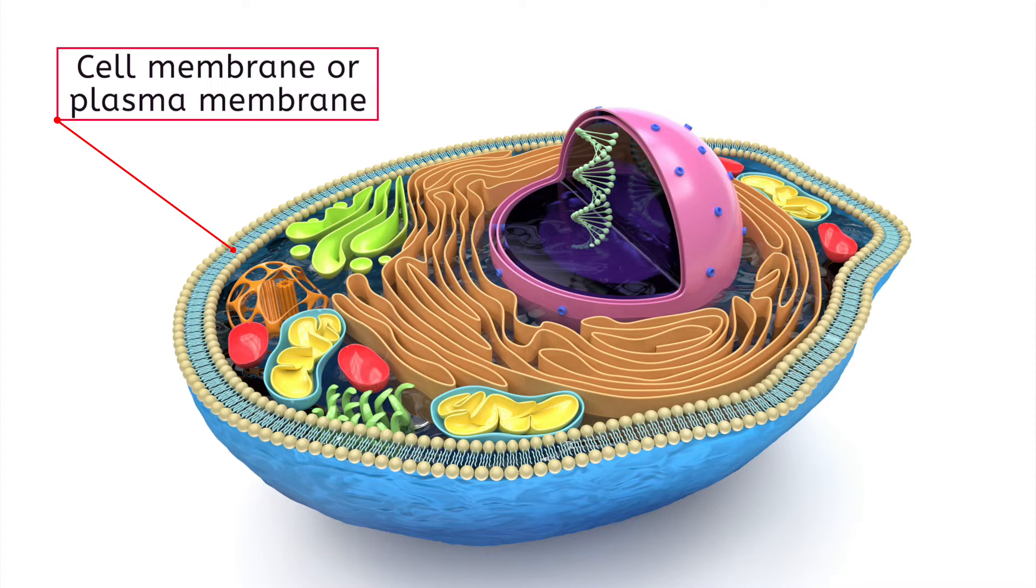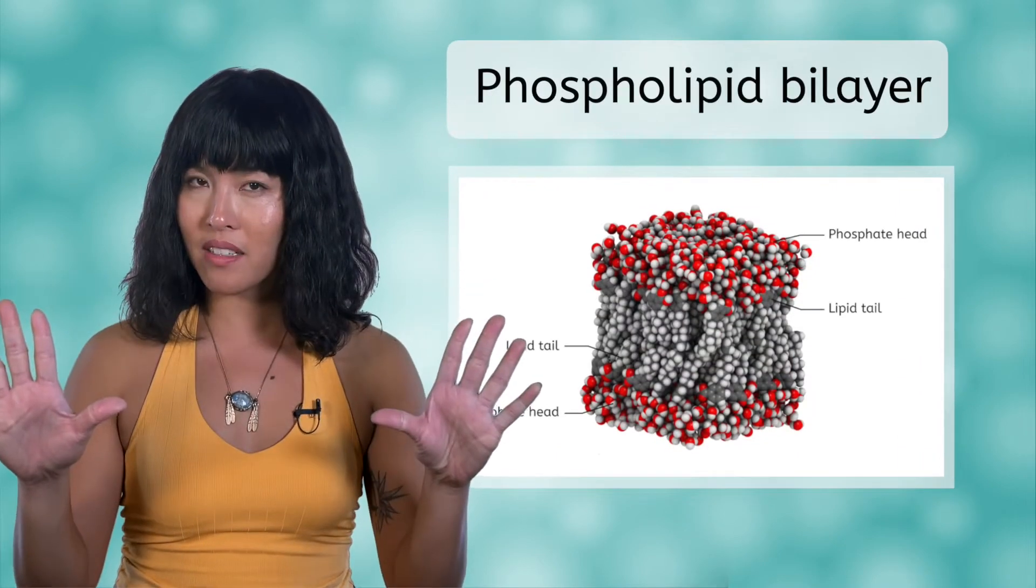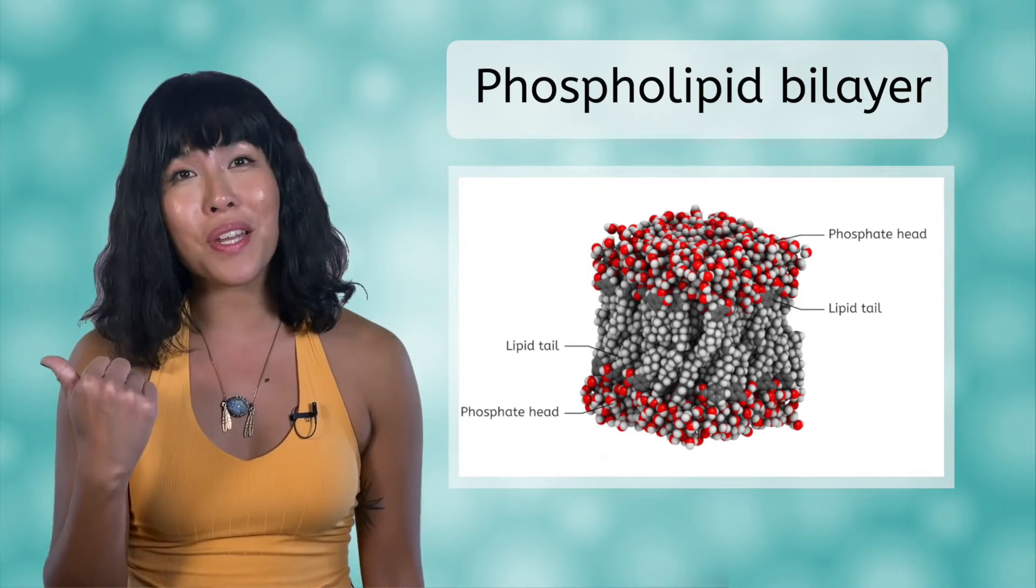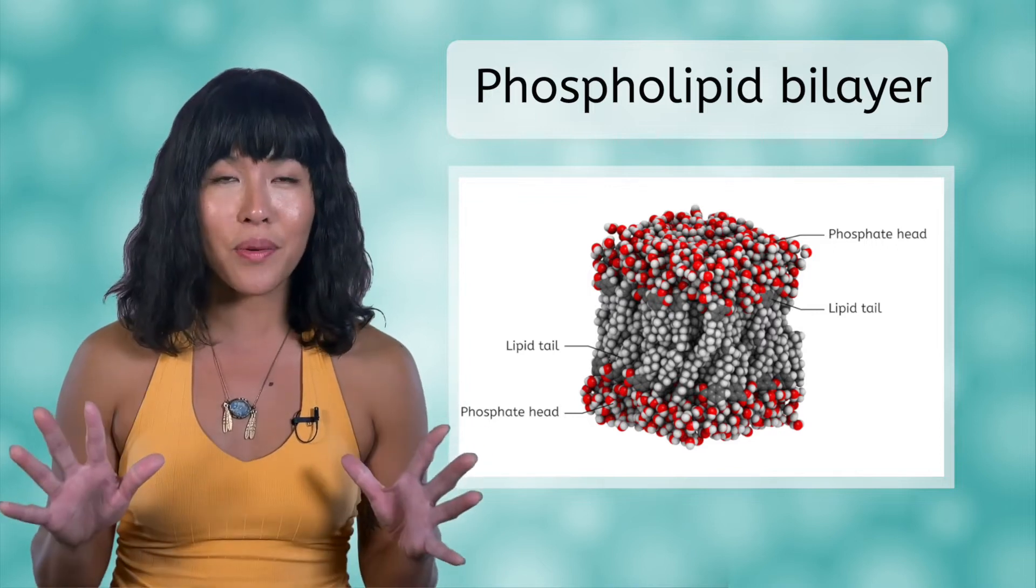Sometimes you'll also see it referred to as the plasma membrane. The structure of the cell membrane has a specific description. It is a phospholipid bilayer. You learned about phospholipids in the previous unit, but just in case that word still sounds a little like an alien language, let's dissect it to figure out what it means.